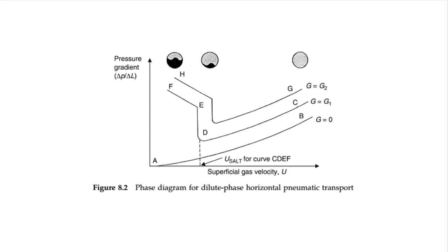The velocity at point D represents the saltation velocity where particles begin to settle out. Any further decrease in gas velocity causes rapid settling out of solids, and the pressure drop increases as solids restrict gas passage. Usaltation is a boundary between dilute and dense phase transport.